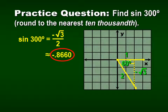If we put negative square root of 3 over 2 into our calculator and make sure we're in degrees, we get negative 0.8660. On your TI-83 calculator, go to Mode and make sure you're in degrees and not radians. Then go back to the main screen, hit Sine, enter 300, and press Enter — you should get negative 0.8660.